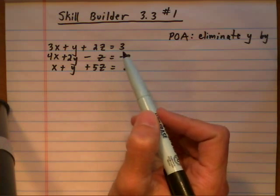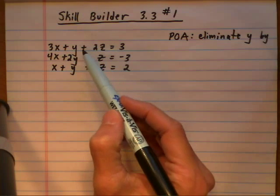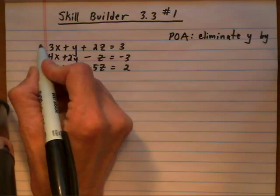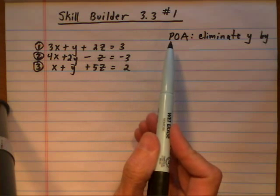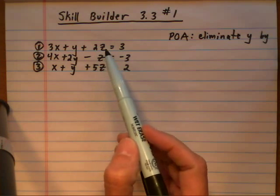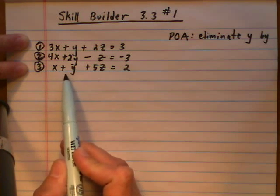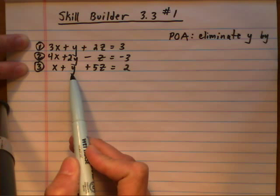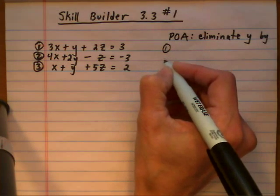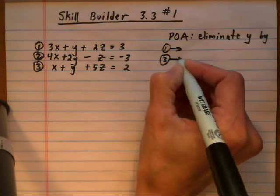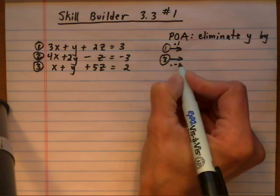I looked at it and thought it would be easiest to eliminate y. We'll eliminate it first by taking equations 1 and 3. Let's number our equations 1, 2, and 3. Our plan of attack is to eliminate y by taking equations 1 and 3 — if we multiply one of these by a negative, we'll get opposite coefficients for the y terms and they'll cancel when we add. So we'll multiply equation 1 by 1 (keep it as is) and multiply equation 3 by negative 1.